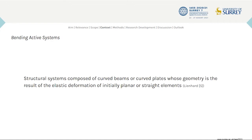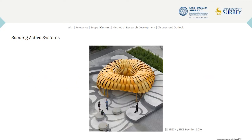Bending active systems are structural systems composed of curved beams or curved plates that gain stability from the geometric stiffness of the material in its deformed state. An example is the 2010 ICD-ITK Research Pavilion, which employs initially planar birch lamellas to create a complex curved interlocking cell structure.